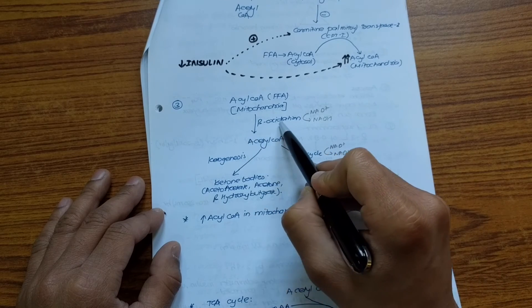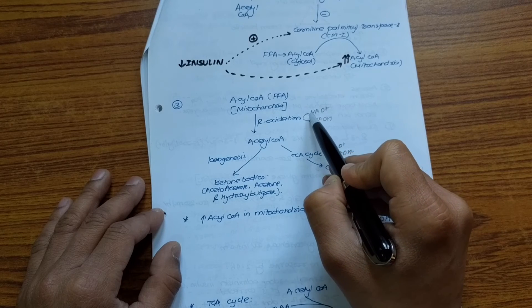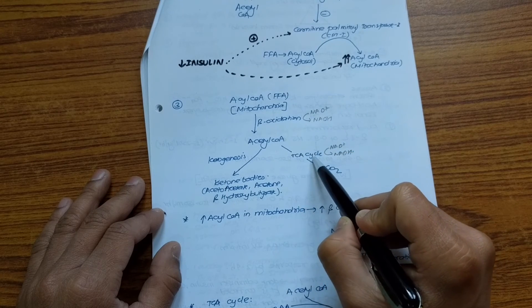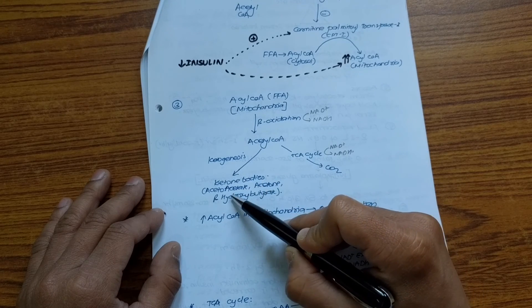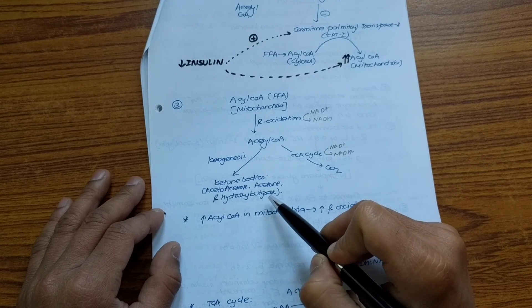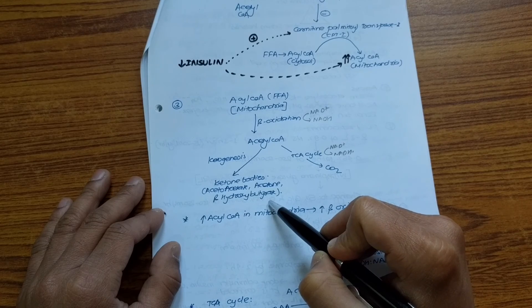But since beta-oxidation is going on inside the mitochondria, this will use up NAD+. And since NAD+ has been used up, there won't be sufficient NAD+ for the TCA cycle to run. And hence acetyl-CoA will be diverted to form ketone bodies: acetoacetate, acetone, and beta-hydroxybutyrate. And this is why diabetic ketoacidosis occurs in type 1 diabetes mellitus due to absolute insulin deficiency.